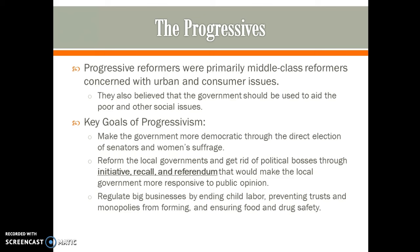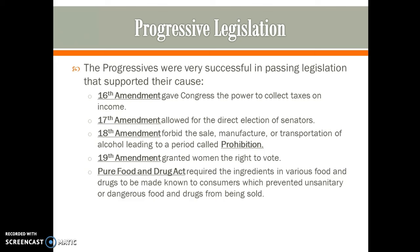There were events during the Progressive Era that made people concerned about what was going into their food and medicine. Progressives were very successful, getting four amendments passed. The 16th Amendment gives Congress the power to collect income taxes. The 17th Amendment allows for the direct election of senators — previously senators had been voted in by state legislatures. The 18th Amendment forbids the sale, manufacture, and transportation of alcohol, leading to a period called Prohibition. The 19th Amendment, not passed until 1920, granted women the right to vote.